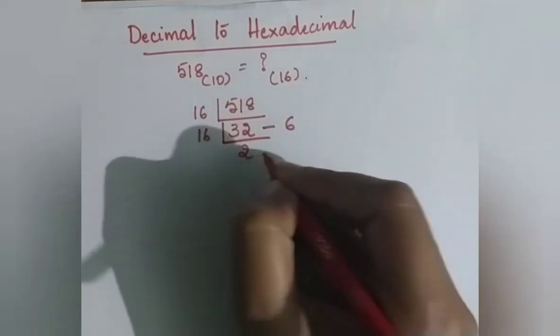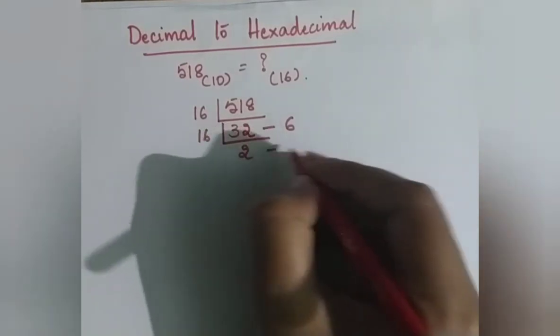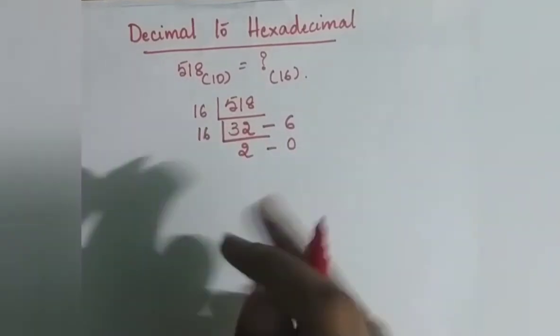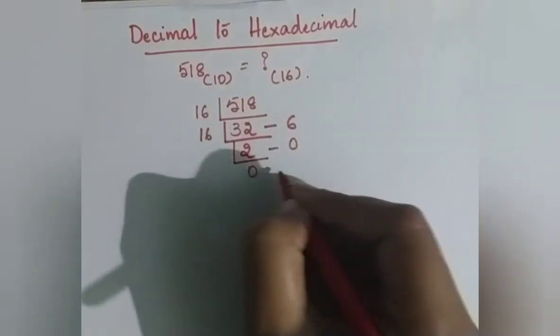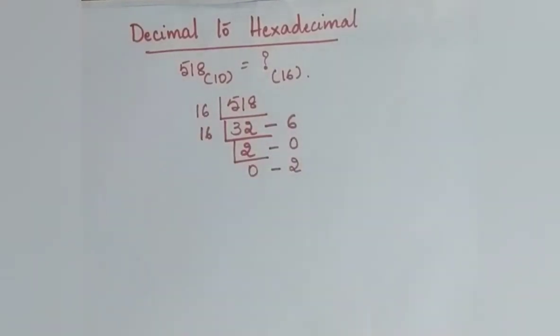16 goes into 32, so 0 remainder. 2 divided by 16 to hexadecimal gives 0 remainder.